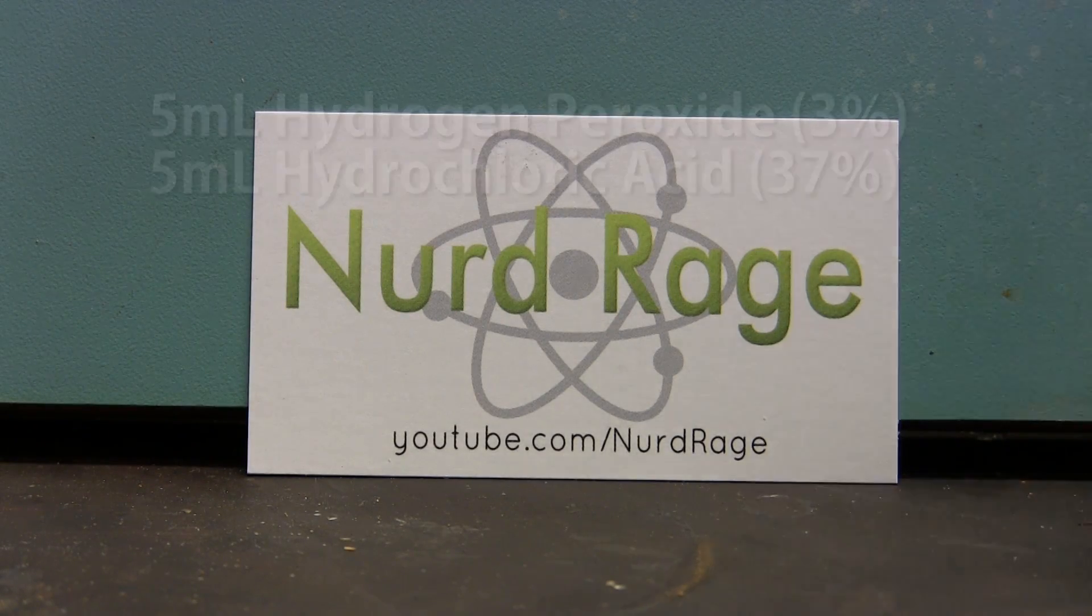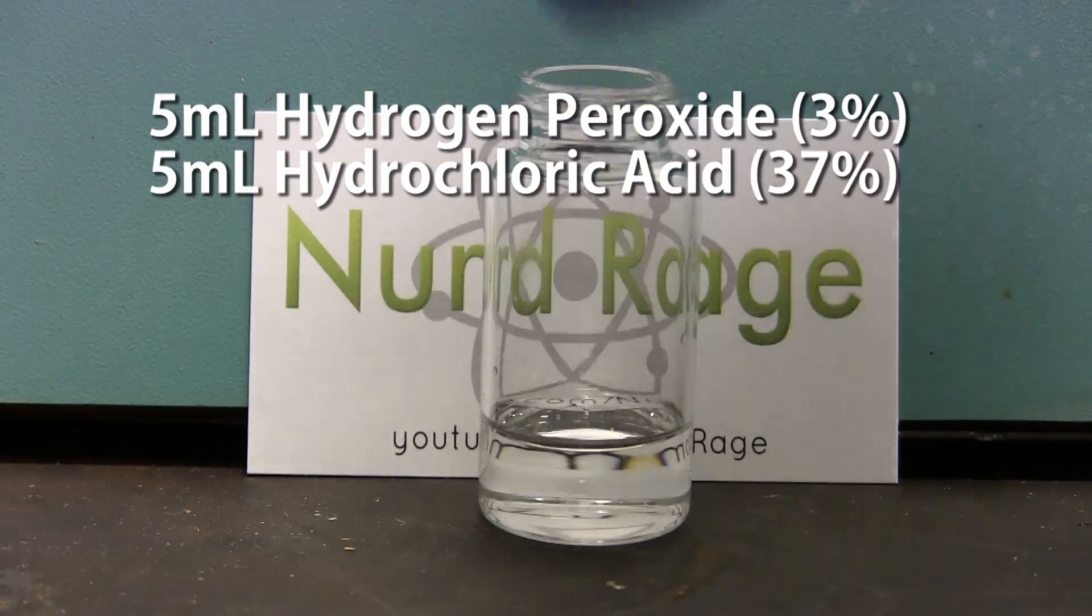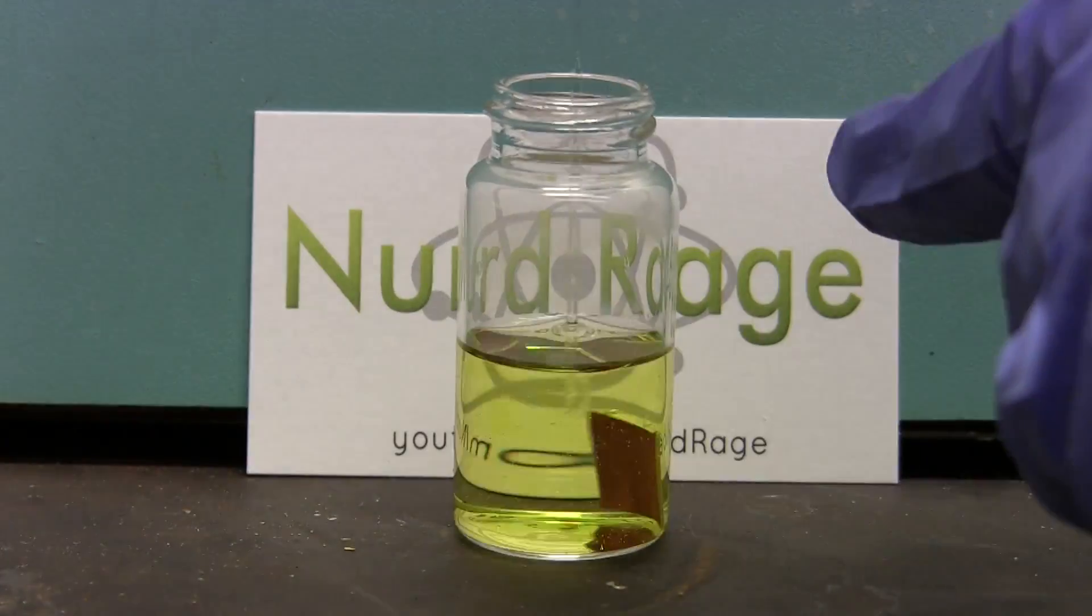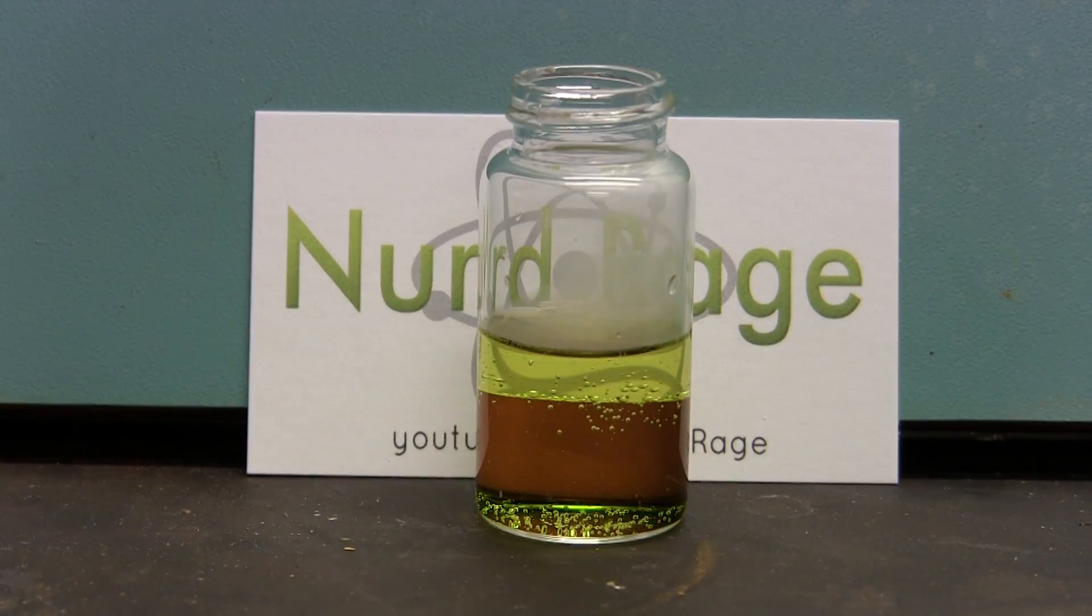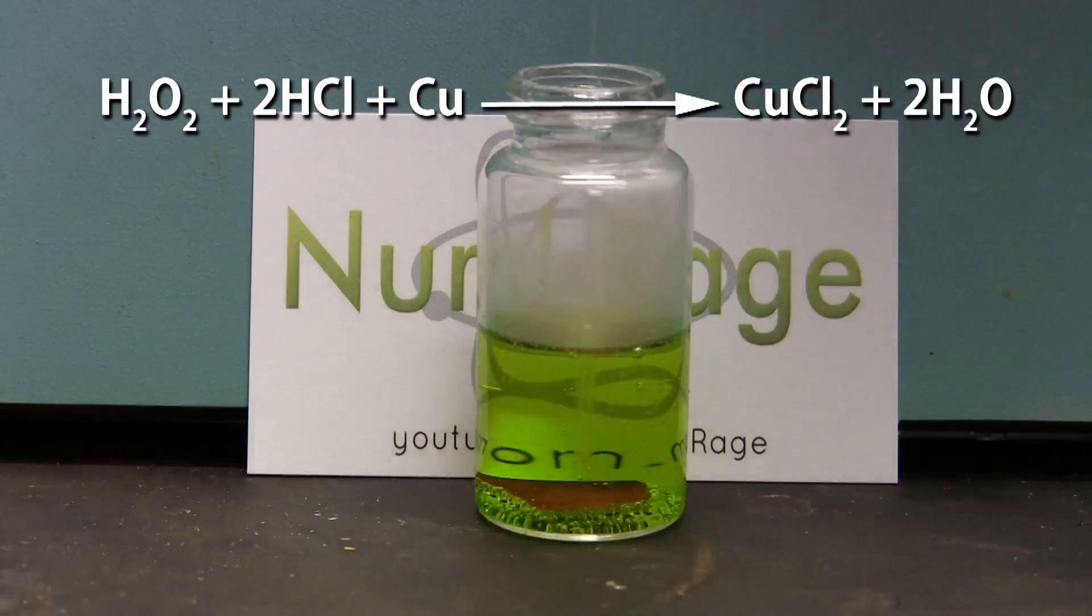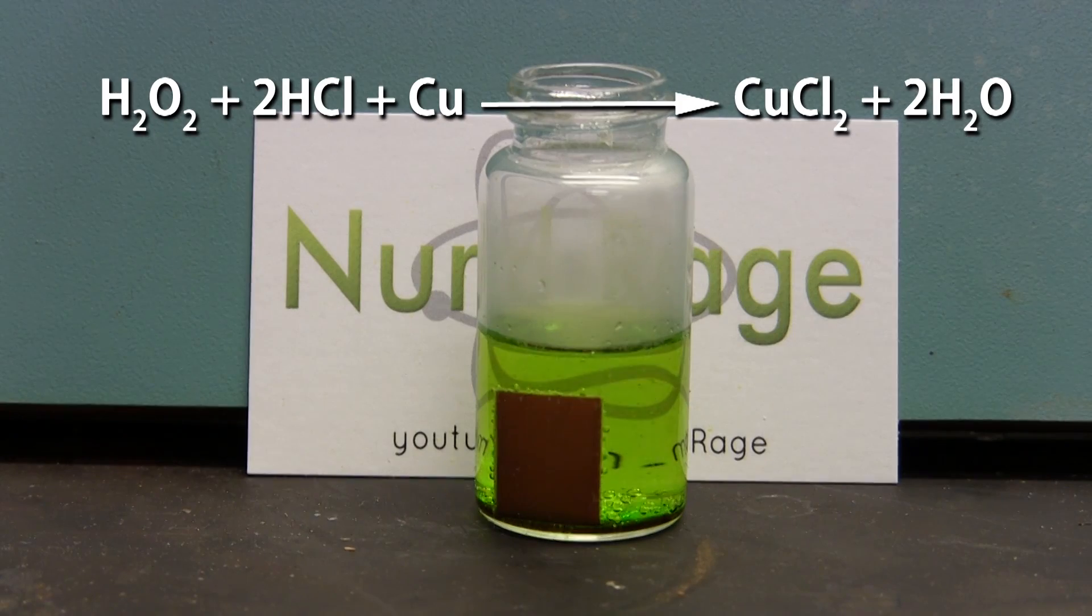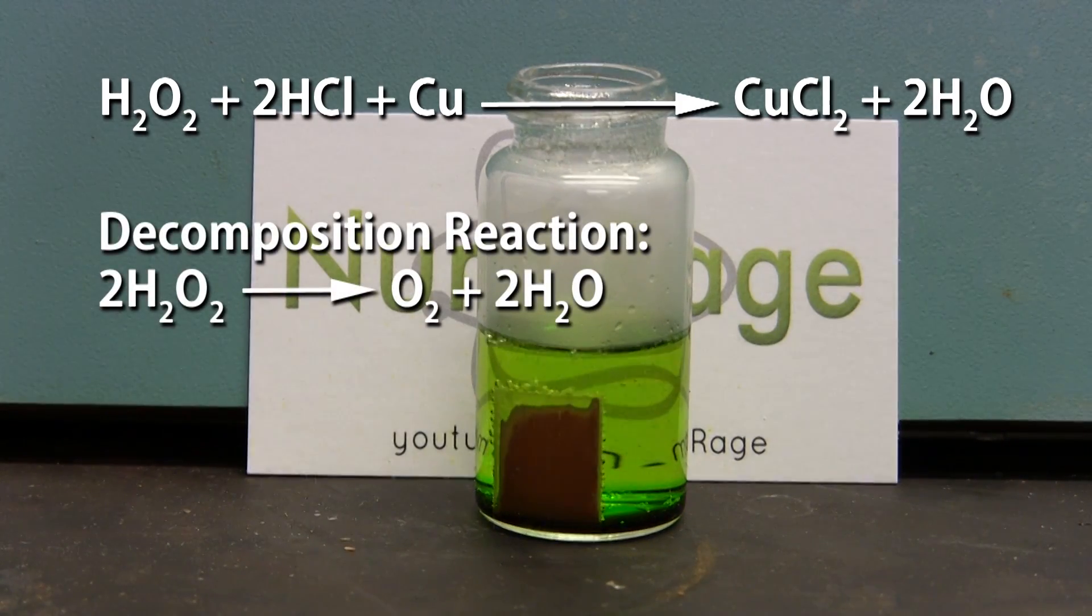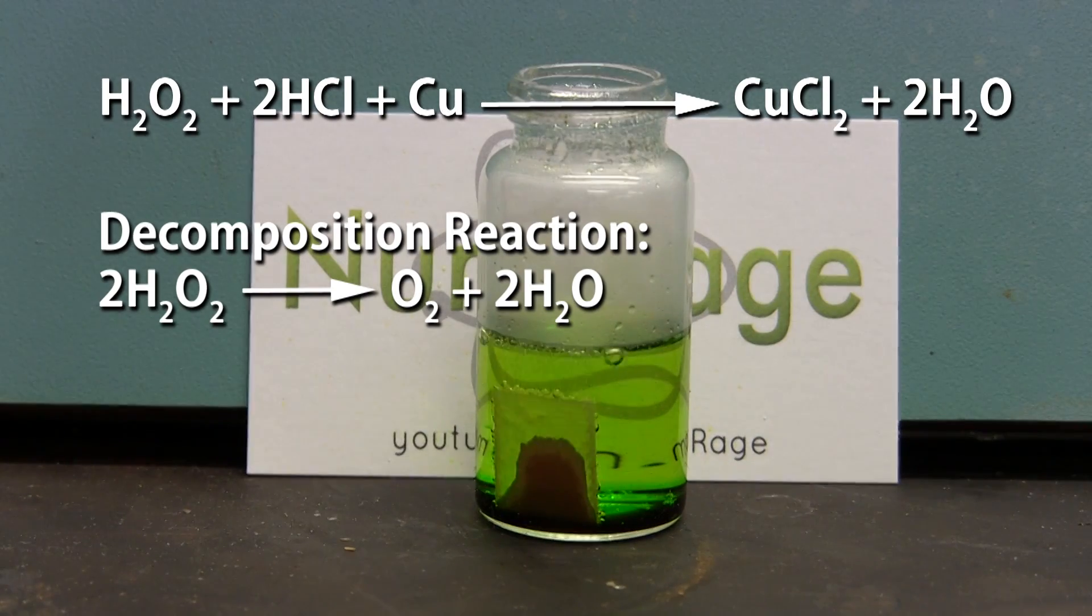First in the peroxide family of etchants is hydrogen peroxide along with an equal amount of concentrated hydrochloric acid. This etches pretty easily and is the most popular homemade etching solution. What's happening is the hydrogen peroxide is oxidizing copper and reacting with hydrochloric acid to produce copper chloride.